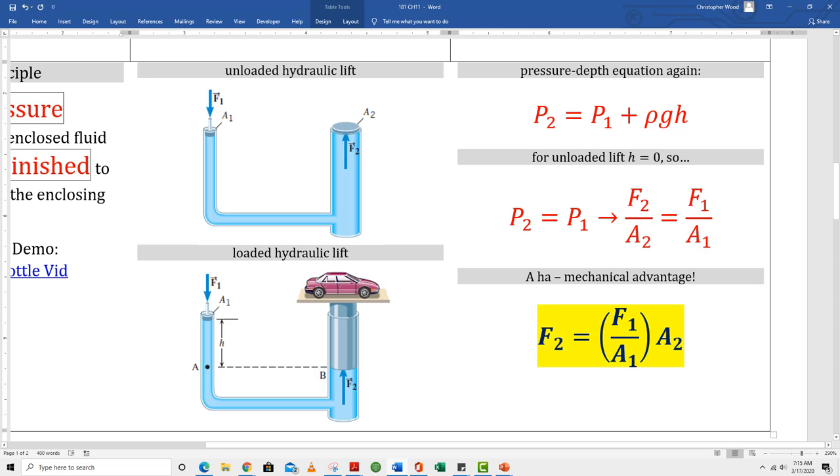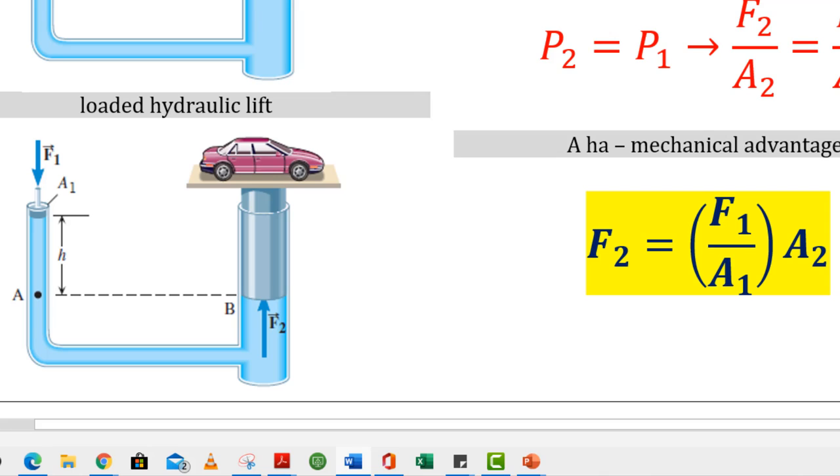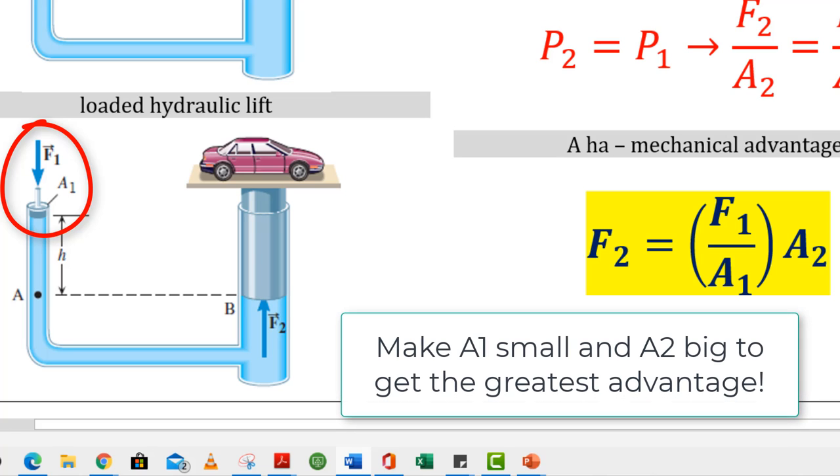If we start with the pressure-depth equation and remember that pressure is the same everywhere in an enclosed liquid, we end up with this equation right here. It's basically saying if I apply a force to a small plunger like you see here, it gets transmitted through the enclosed liquid and ends up producing a much larger force at the output platform. This is why we like hydraulics. I can apply a given force and have it multiplied to produce a much greater force on the other side.